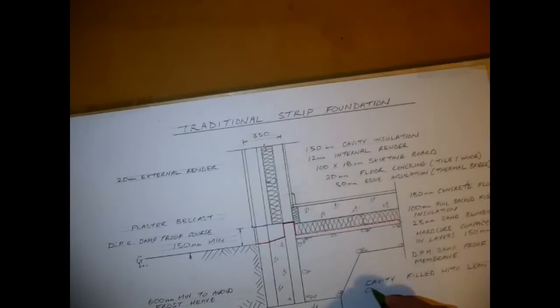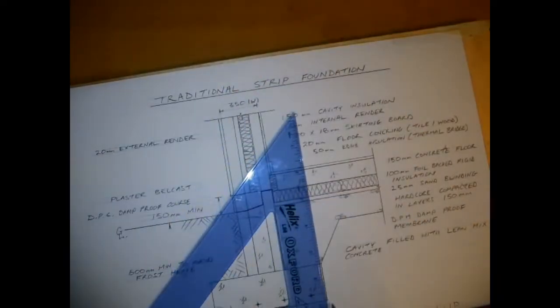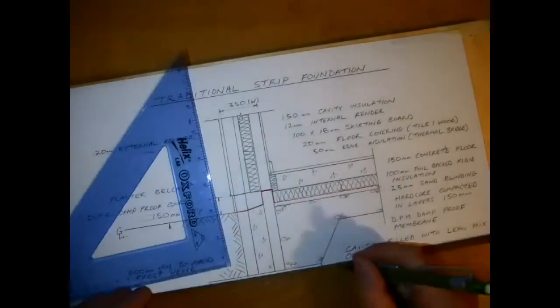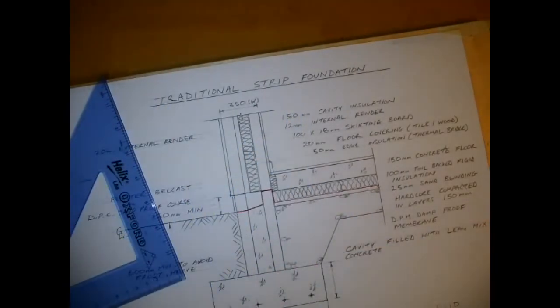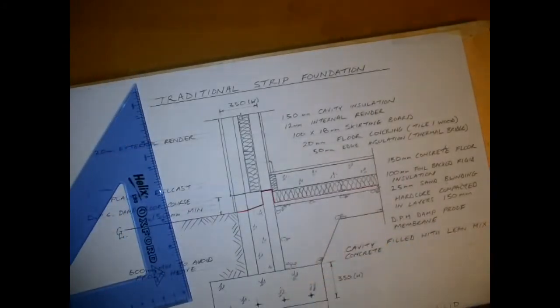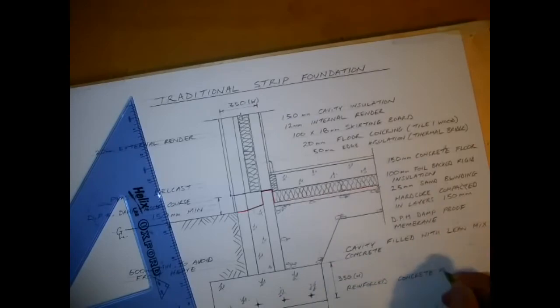This could also be a cavity block or like a foundation block, which is a large block which is a 300 mill block that'll be laid in flat. Important as well too is the foundation to show that you have three times the width shown for the width of the foundation.